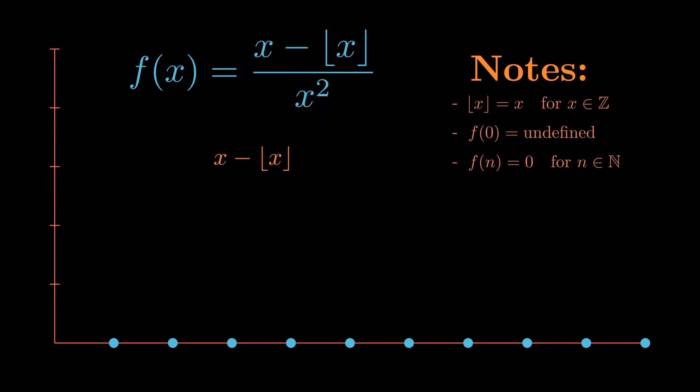Now let's think about what happens as x approaches any natural number from below. For example, as we approach 4 from below, the difference between x and floor of x grows closer and closer to 1. This is true in general for all natural numbers. Therefore, the numerator of this limit is 1. The denominator clearly approaches n squared. Thus, our function approaches 1 over n squared from the left for all n in ℕ.